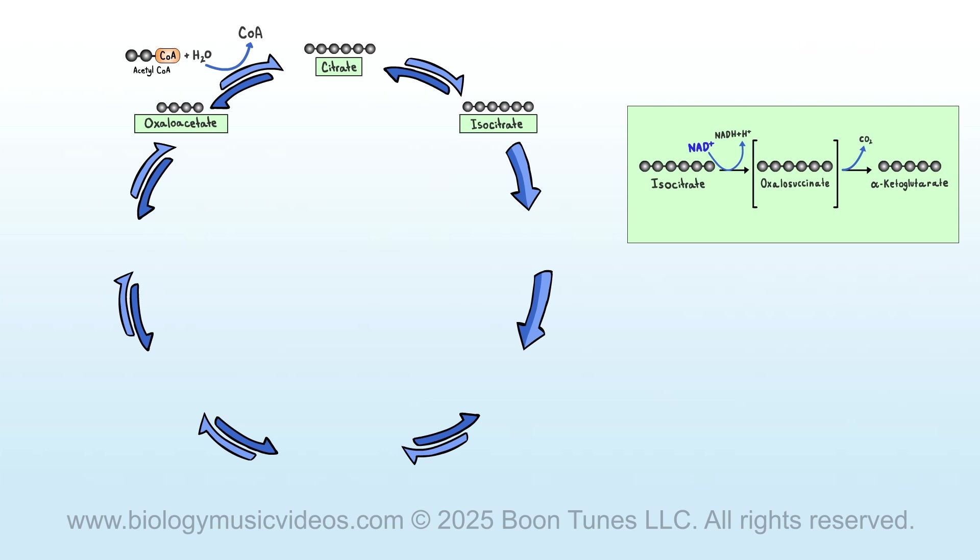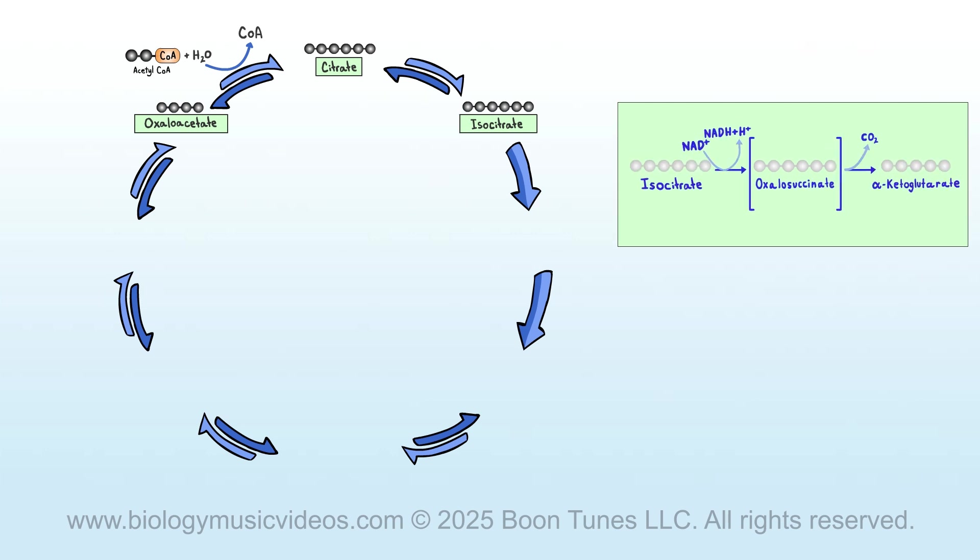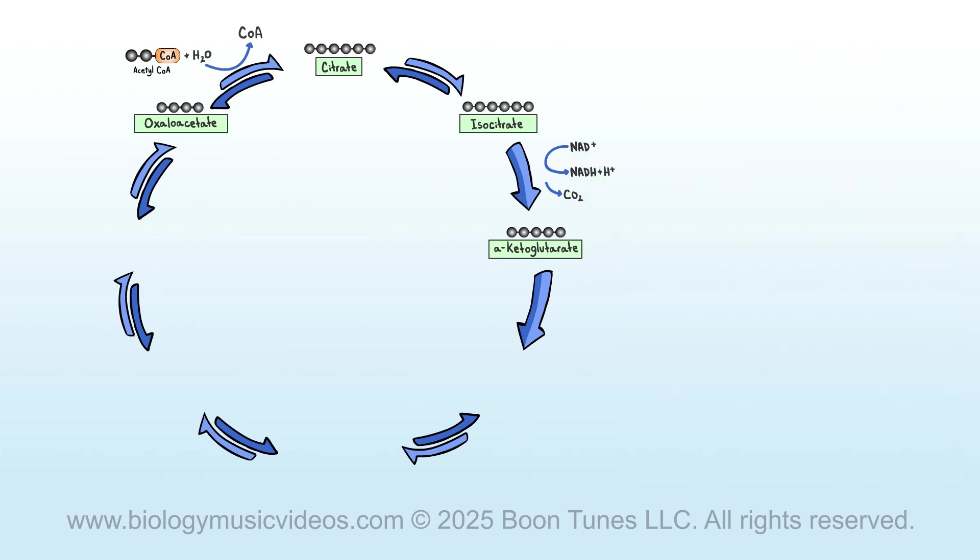NAD plus quickly arrives, and the isocitrate is oxidized. The NAD plus gets reduced, and NADH and H plus are produced. An unstable compound is derived, which loses carbon dioxide. So this reaction will generate alpha-ketoglutarate. Just for the sake of brevity, we'll refer to this as AKG, an important compound which contains five carbon atoms in its chain.